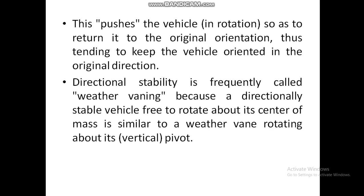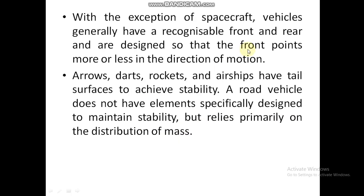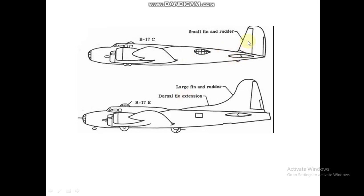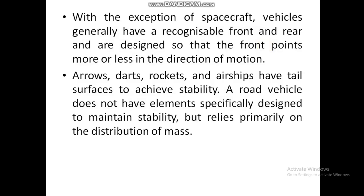A directionally stable vehicle free to rotate about its center of mass is similar to a weather vane rotating about its vertical pivot — a weather vane is used to find the direction of wind. Examples include spacecrafts and vehicles. Vehicles generally have a recognizable front and rear and are designed so that the front points more or less in the direction of motion. Arrows, darts, rockets, and airships have tail surfaces to achieve stability. In road vehicles, most of the stability is contributed by the distribution of the mass of the vehicle.